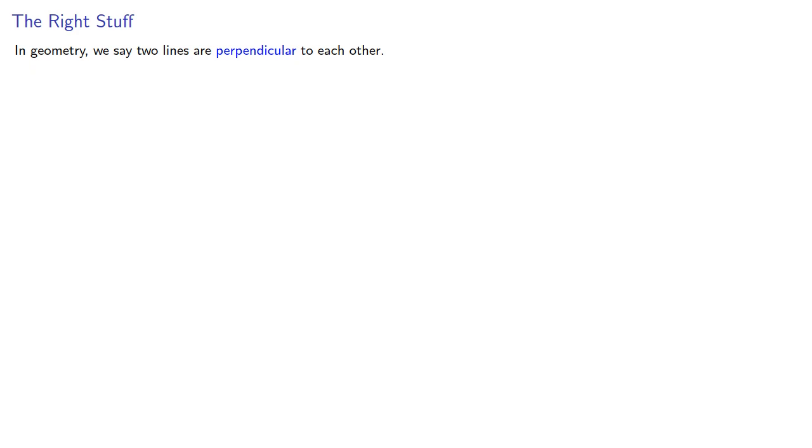In geometry we say two lines are perpendicular to each other. In higher mathematics we use the term orthogonal, and so we might ask the question, when are two vectors orthogonal?